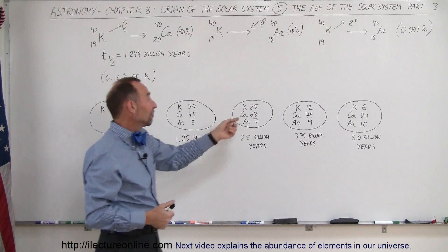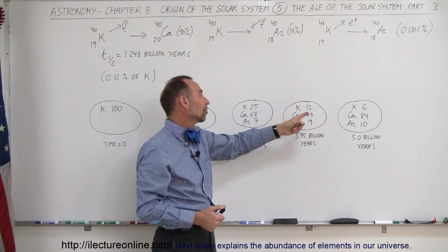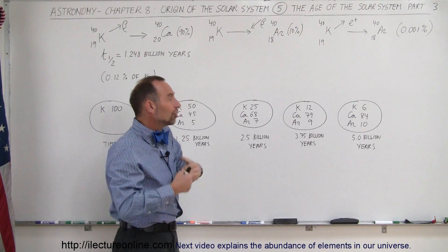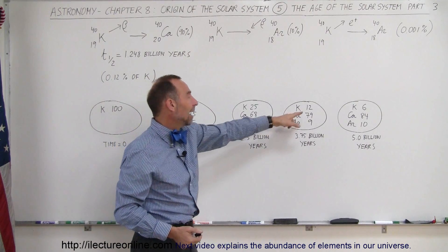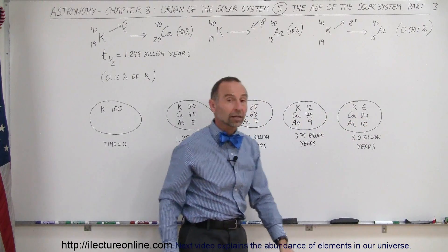Again, after another half-life, half of the 25% is now gone, and you only have 12% left for potassium, 79% calcium, 9% argon. And then after another half-life, half of 12% will be gone, you only have 6% left with 84% calcium and 10% argon.